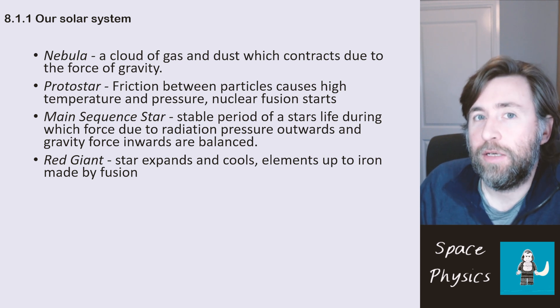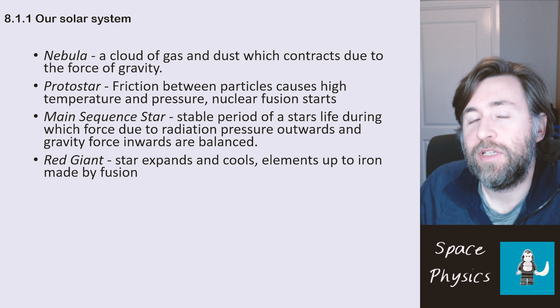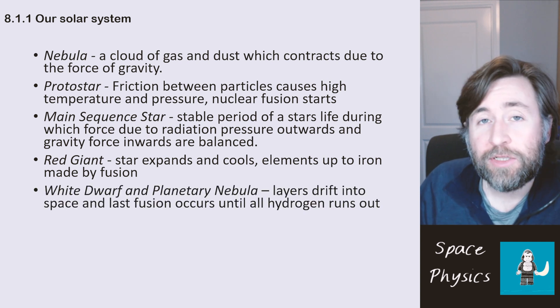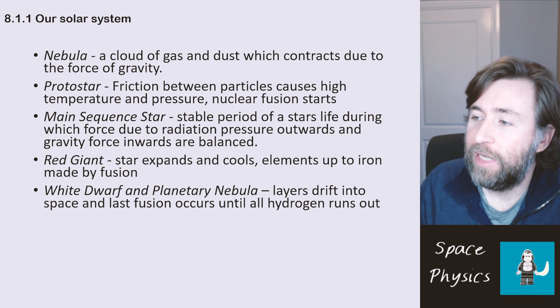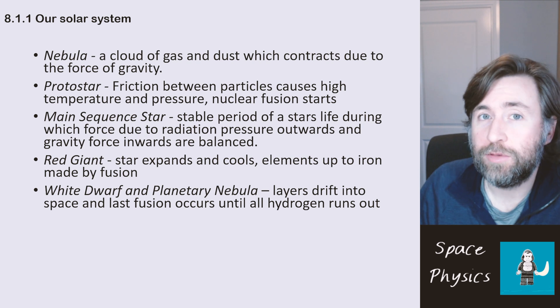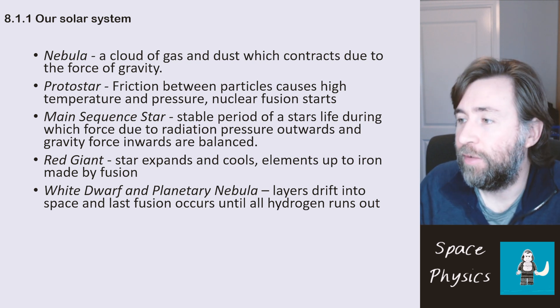Elements up to iron are made, so elements as heavy as iron are made during that process of expansion and cooling. Then eventually the outer layers of that red giant drift out into space and the very last bits of fusion occur and we're left with what's called a white dwarf, small but hot star, and a planetary nebula around it.